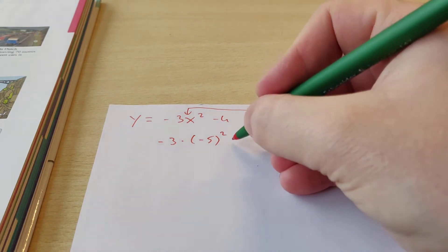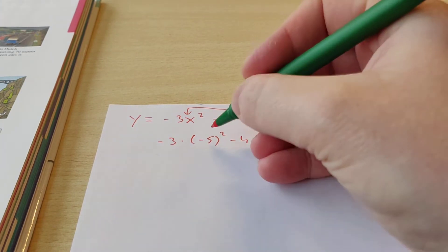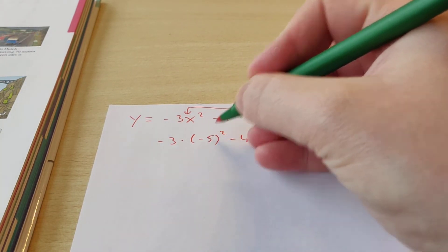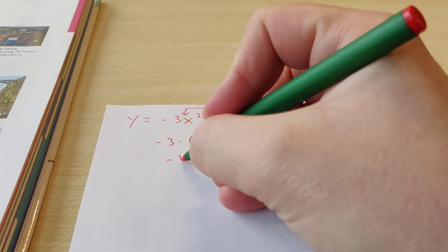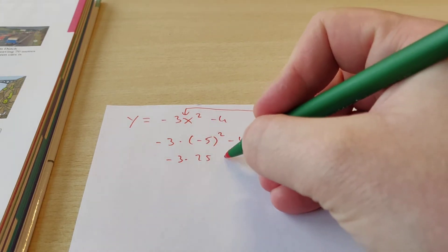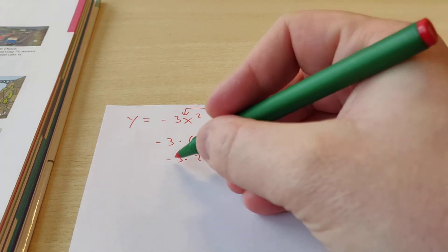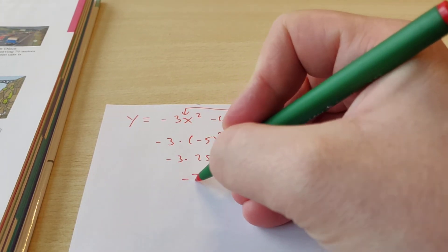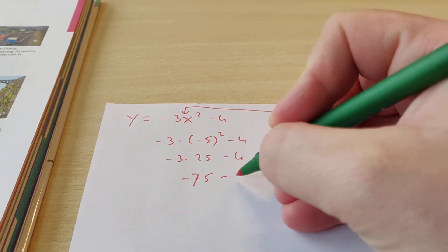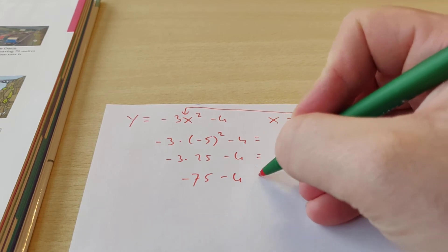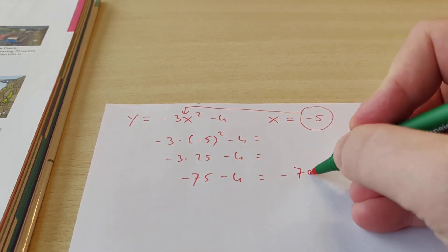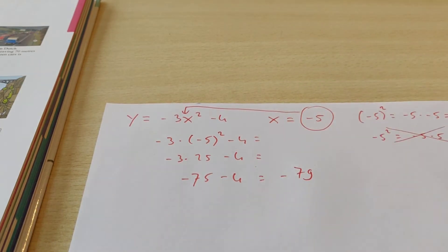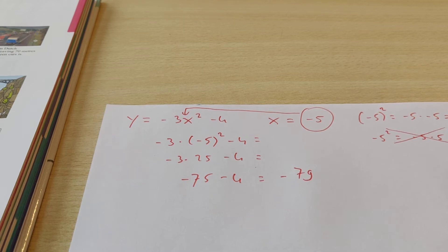So we get minus 3 times, in brackets, minus 5 squared, and then minus 4. That gives us 25, then minus 3 times 25 minus 4, which is minus 75 minus 4, and then you get minus 79. That's the answer for 20A.